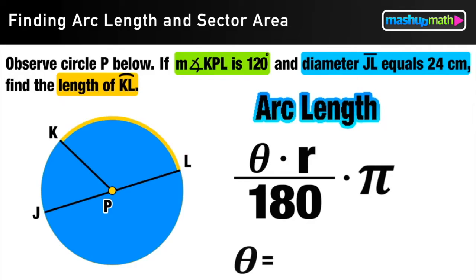So now to use that formula, I need two pieces of info. I need the measure of the central angle theta, and I need the length of the radius. That's going to be our R value.